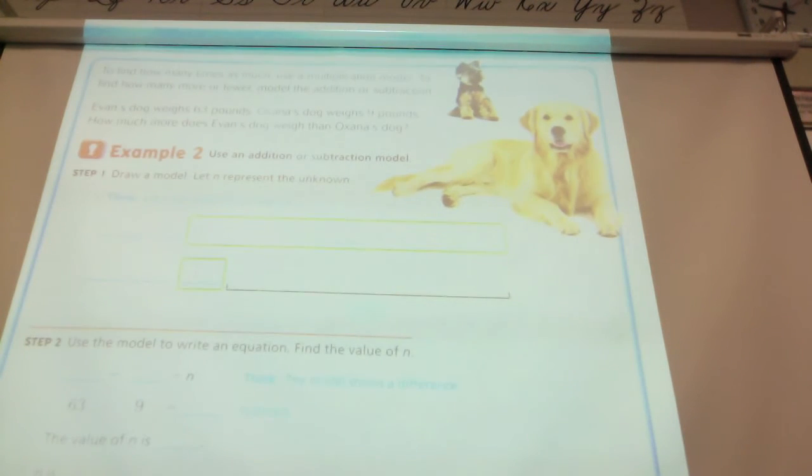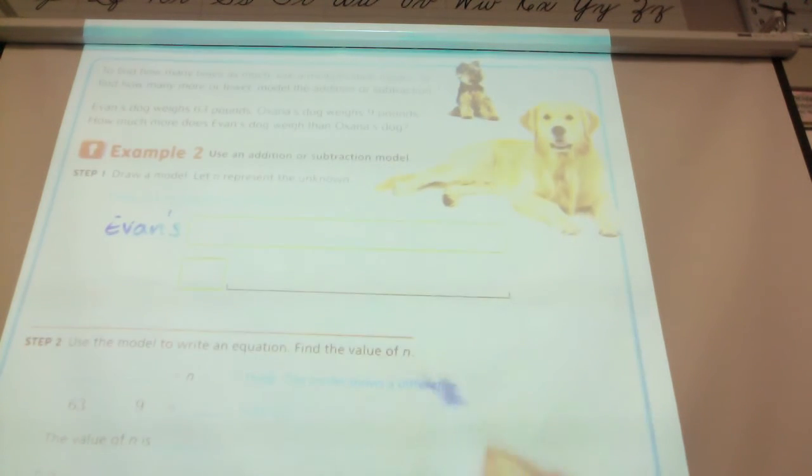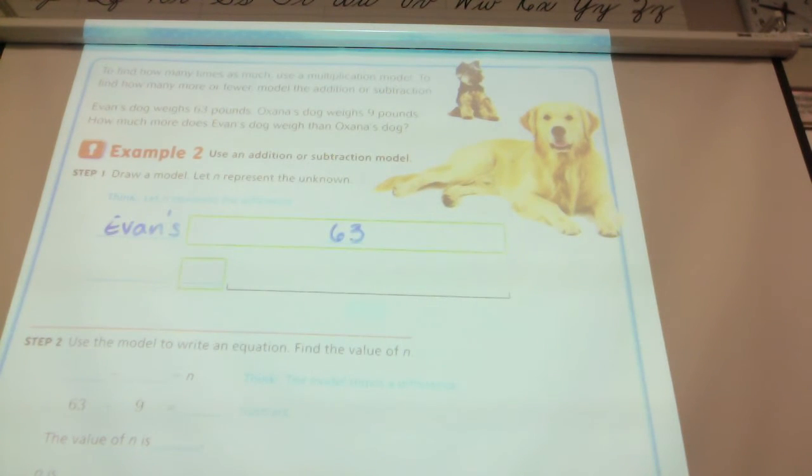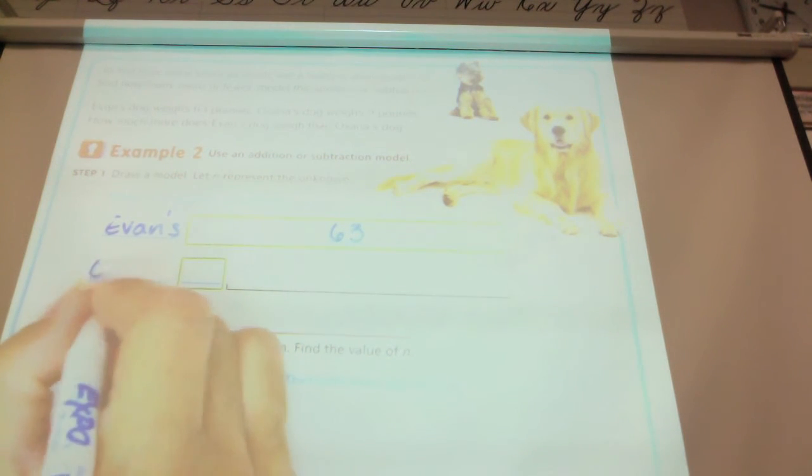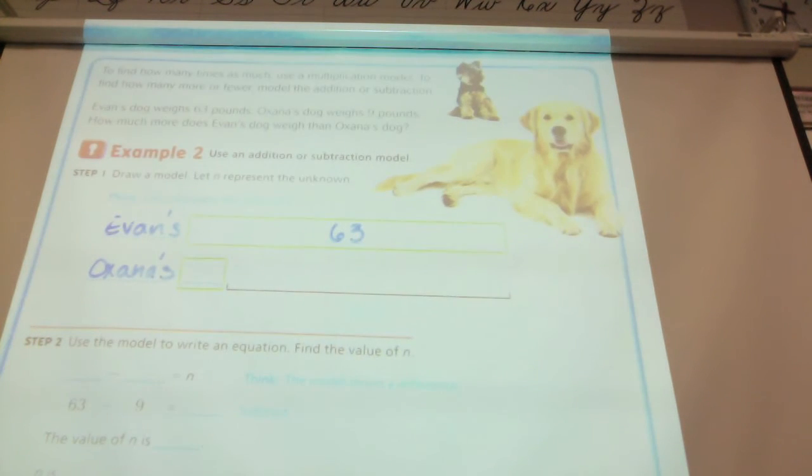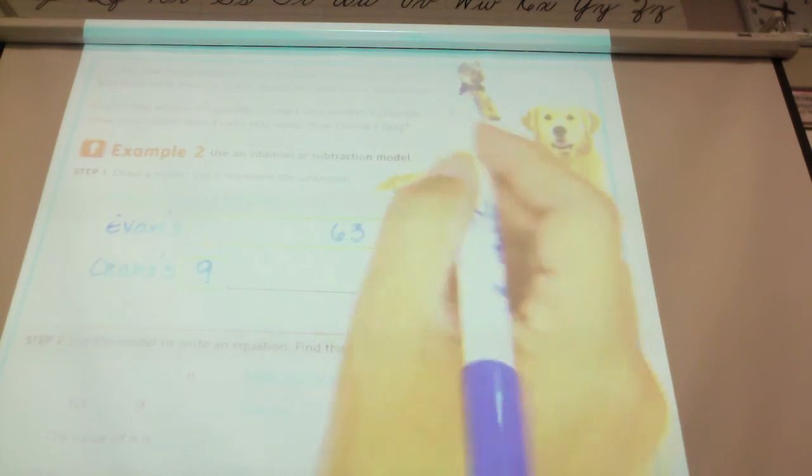Which dog do you think is represented up here? Go ahead and tell me. Evan's dog. Evan's dog, because he's the bigger dog, right? And how much did Evan's dog weigh? 63 pounds. So, this is Oksana's dog. And Oksana's dog weighs? 9. 9 pounds. It's a bigy little terrier there.